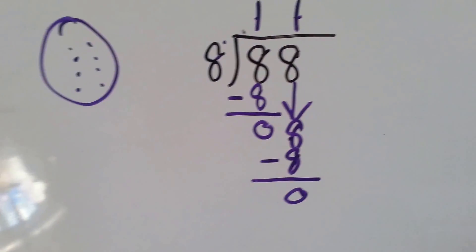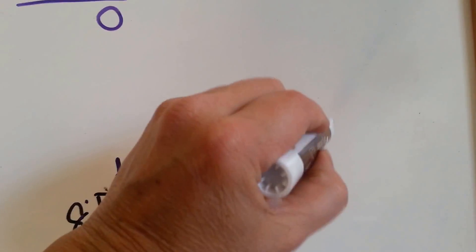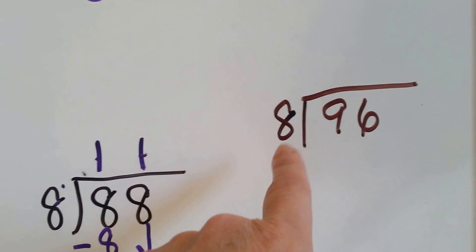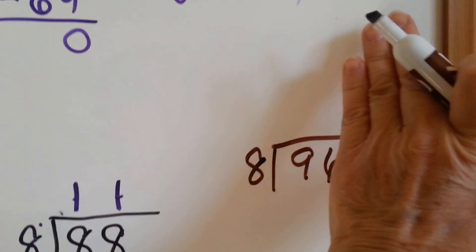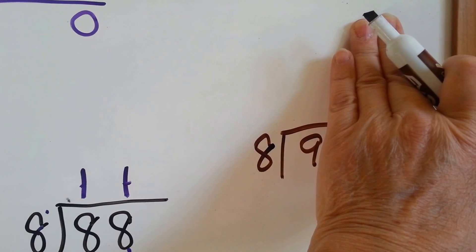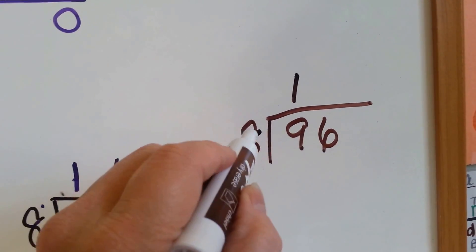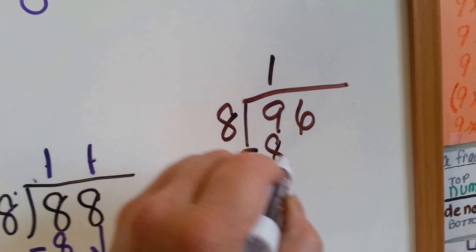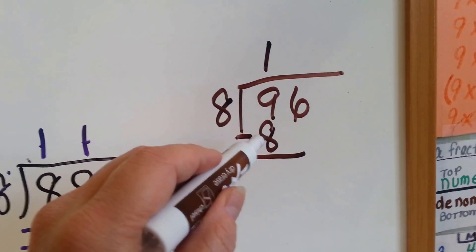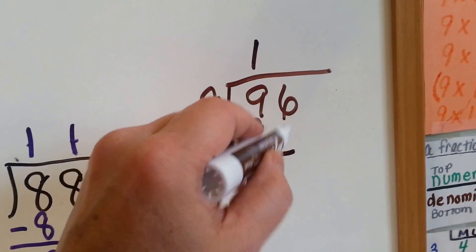You want to try another one? One last one. Let's try this one. How many times can 8 go into 96? Well, can 8 fit into 9? Yes, it can. How many 8s can you fit in a 9? You can fit 1, right? And then we do 8 times 1, which is 8. And now we do our subtraction. 9 take away 8 is... how many do you have left over? You have 1 left over, because 8 plus 1 is 9, right?